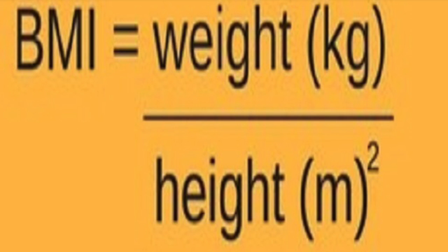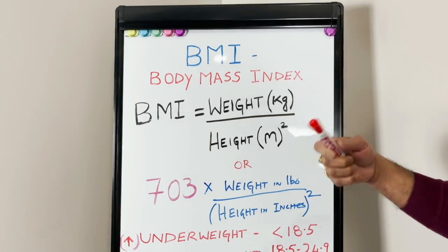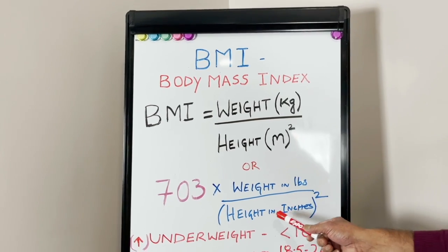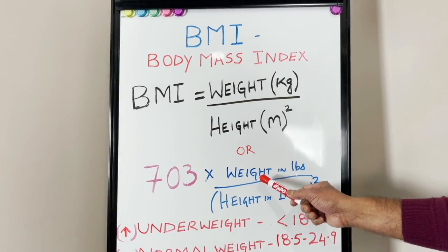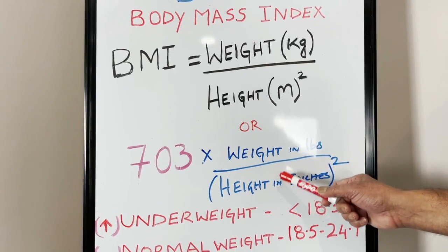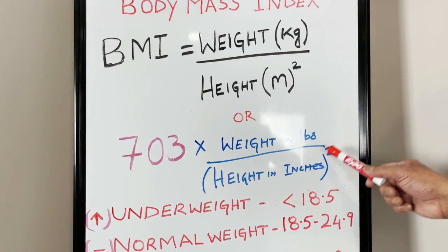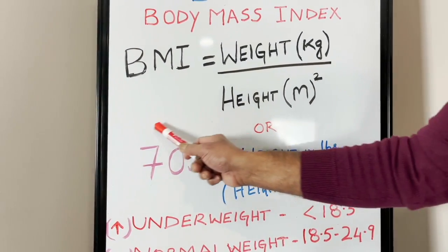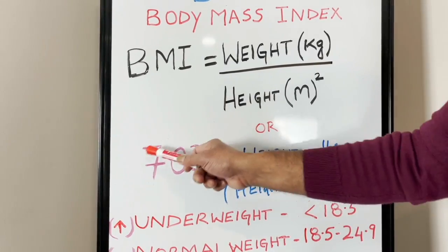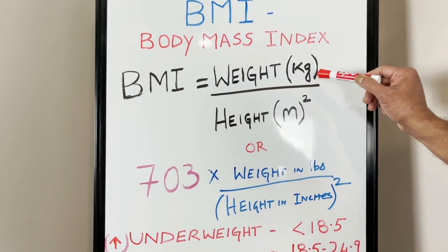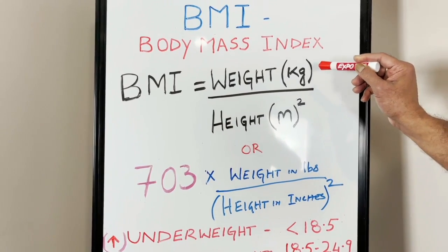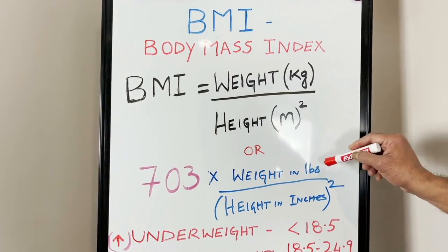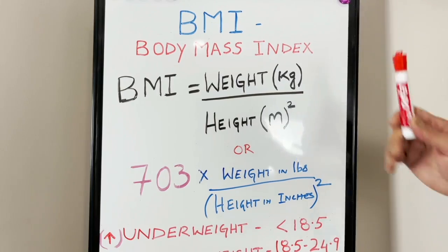The common formula we use is weight expressed in kilograms divided by height in meters squared. We can use the metric system, the SI system, or the imperial system. If you have your weight in pounds and your height in inches, the formula is weight in pounds divided by height in inches squared, then multiplied by a factor of 703. This 703 comes from converting inches to meters and pounds to kilograms.